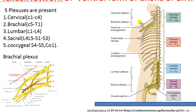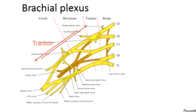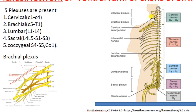The brachial plexus is formed by cervical spinal nerves C5, C6, C7, C8, and part of the first thoracic spinal nerve. The brachial plexus supplies fibers to the upper limbs. The thoracic spinal nerves do not form a plexus; instead, they form intercostal nerves and supply the intercostal muscles.